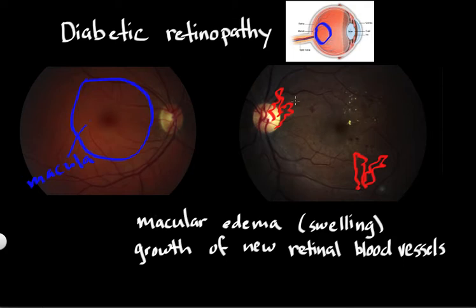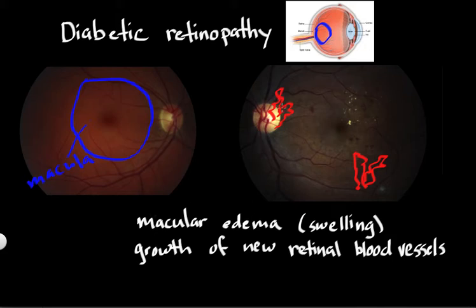One might think that's a great idea — if you have damaged blood vessels, why not build new ones to replace them? Actually, this turns out to be quite a horrible idea for the eye, because these new blood vessels are diseased. They tend to be very fragile and they tend to bleed.